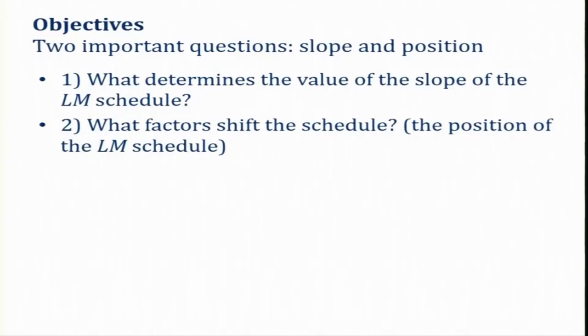Hi everyone, welcome to this session. In the last session we derived the conditions for the money market, where we showed that when money demand is equal to the exogenously determined money supply, the money market is in equilibrium. Accordingly, we derived the LM schedule, which slopes upward from left to right, with the rate of interest on the vertical axis and income on the horizontal axis. When income increases, the rate of interest must also increase so that money demand equals money supply.